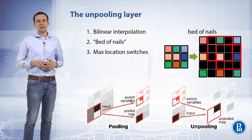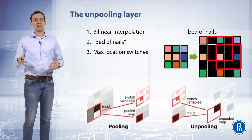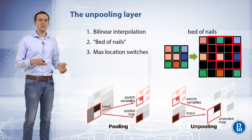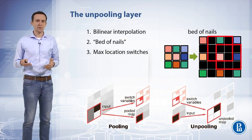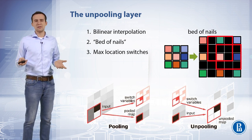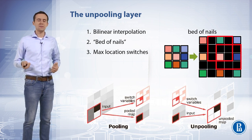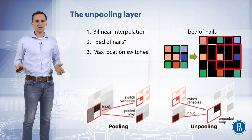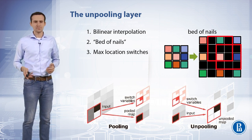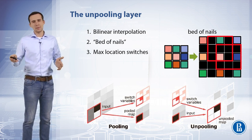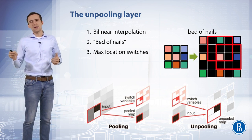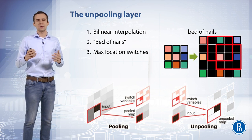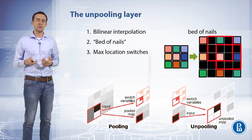For better understanding of the downsampling-upsampling architecture, we need to study the mechanism of unpooling. The max pooling operation is not invertible, so one may consider different approximations to the inverse of max pooling. The easiest way is to use resampling and interpolation: taking an input image, rescaling it to the desired size, and then calculating pixel values at each point using an interpolation method such as bilinear interpolation.